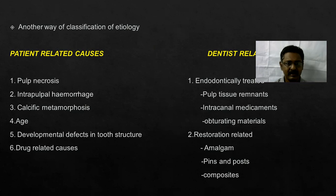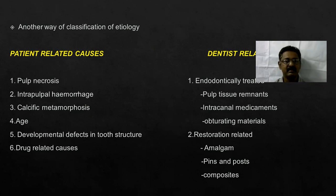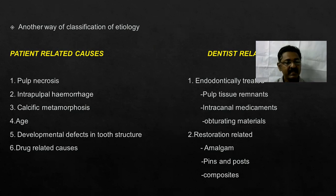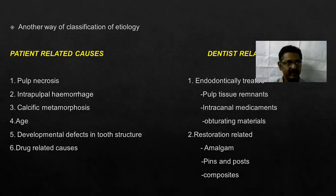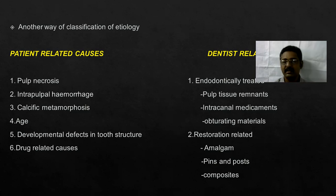There is another classification also — we can classify that into patient-related causes and dentist-related causes. Patient-related causes: again pulp necrosis, intra-pulpal hemorrhage, calcific metamorphosis, age, developmental defects in the tooth structure, and drug-related causes. Then the dentist-related or operator-related causes: endodontically treated tooth — that is pulp tissue remnants in the tooth — then intra-canal medicaments that we use during endodontic treatment, then the different obturating materials that also can discolor the tooth.